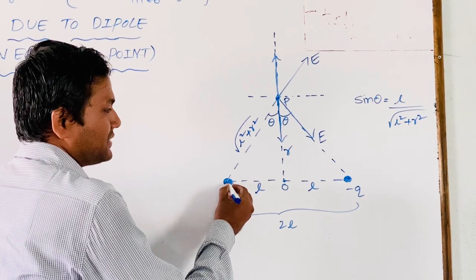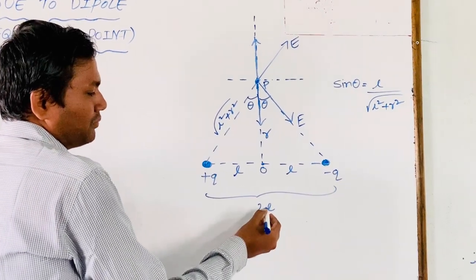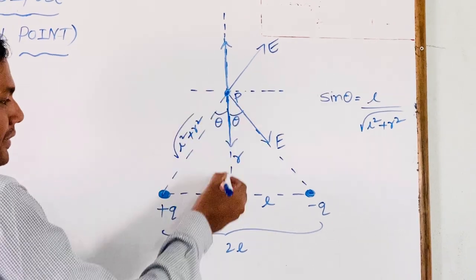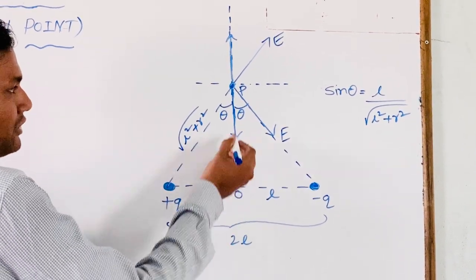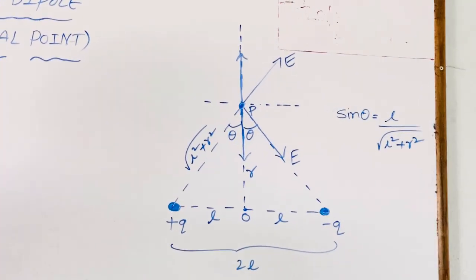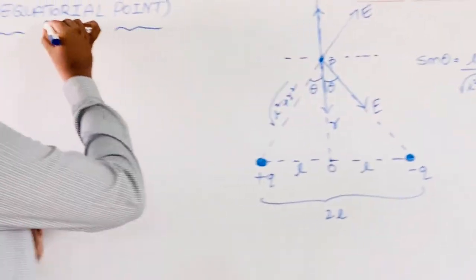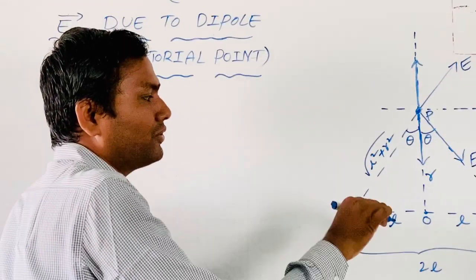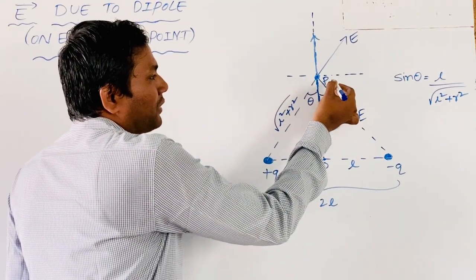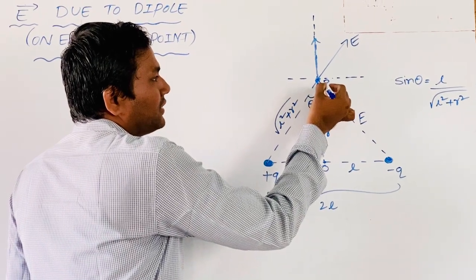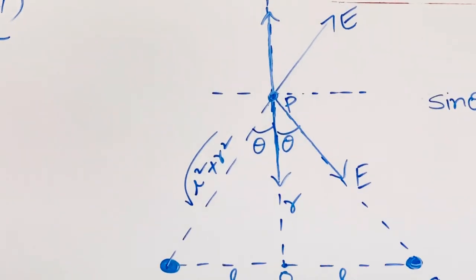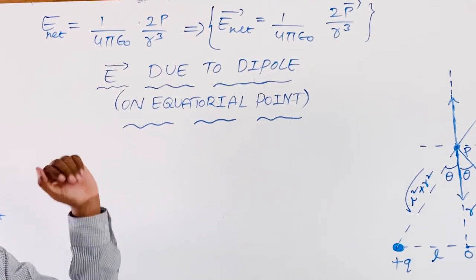The dipole is labeled with charges plus Q and minus Q, both separated by the distance 2L. This is the perpendicular bisector of the dipole, labeled as OP. OP indicates the perpendicular bisector, otherwise called the equatorial line. On that equatorial line you are seeing some point P, and at that point P we need to calculate the electric field. That is our topic.